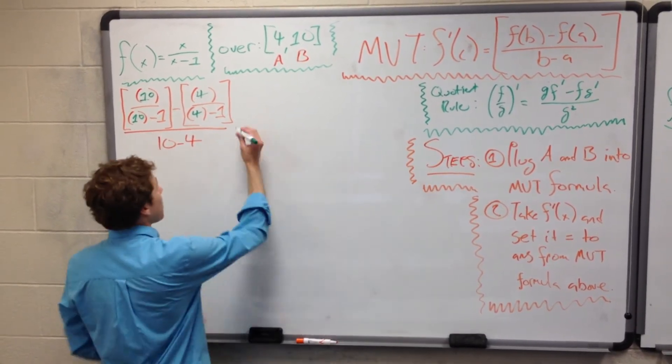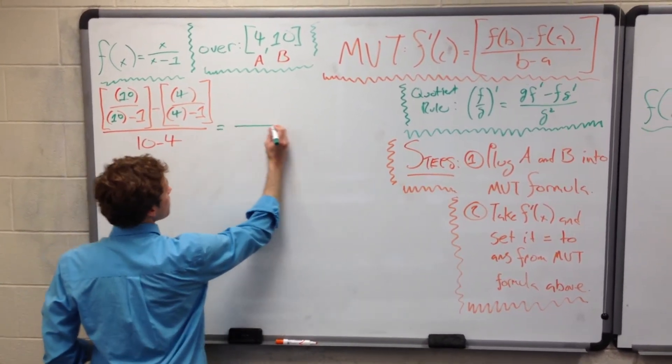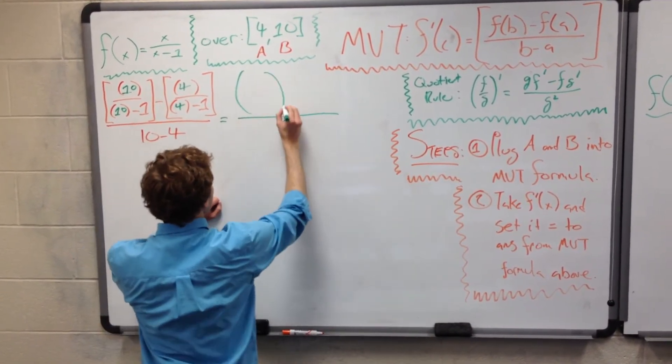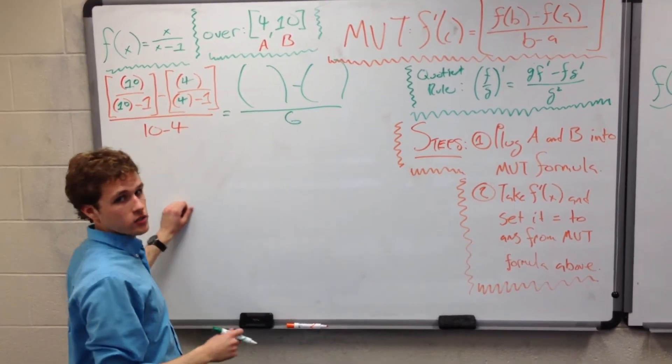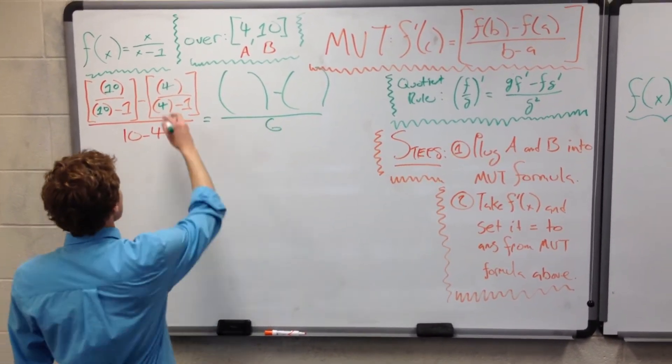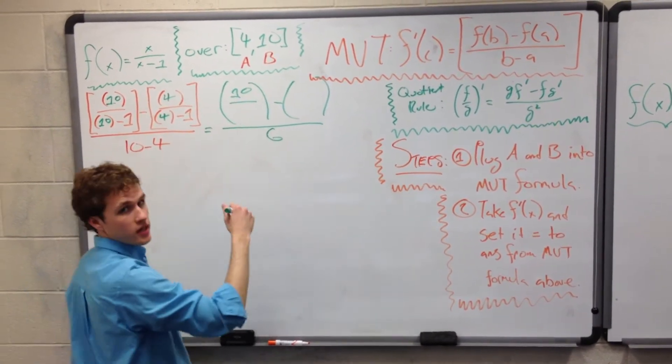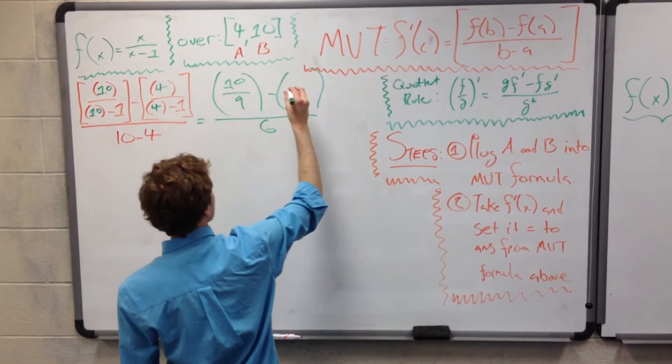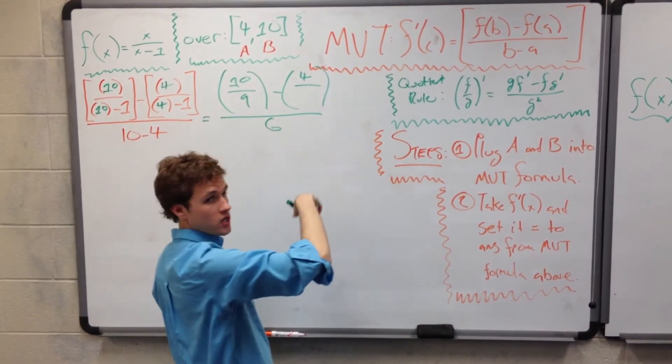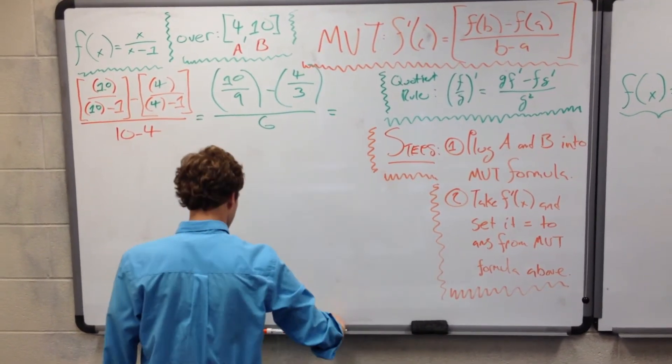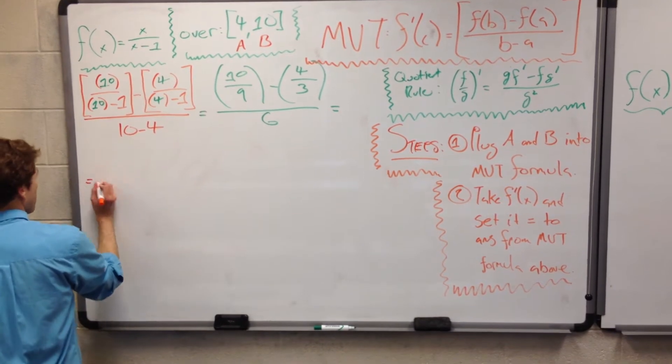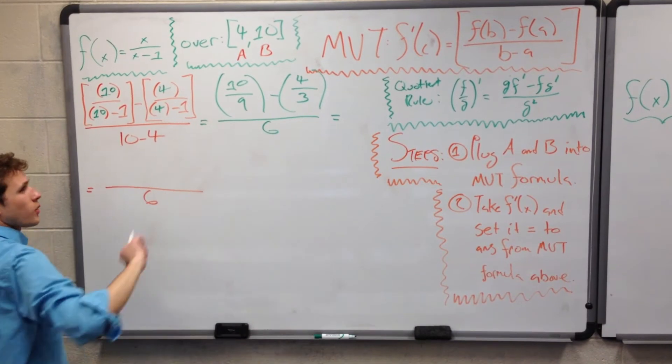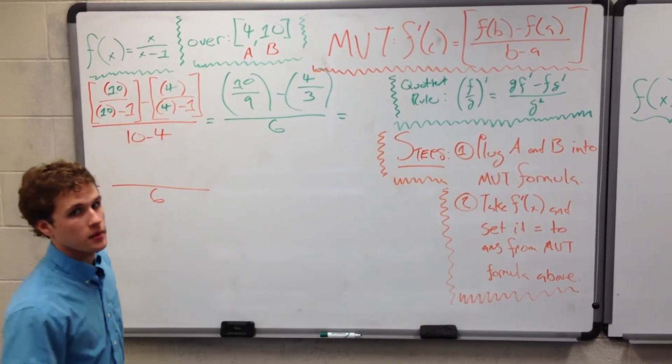Alright, so this denominator, once again, is pretty easy. 10 minus 4 is just 6. We still have our two fractions that we are taking the difference of. So we have 10 over 10 minus 1, which is just 10 over 9. We have minus 4 over 4 minus 1, which is 3. In order to subtract these things, we need to give them a common denominator.